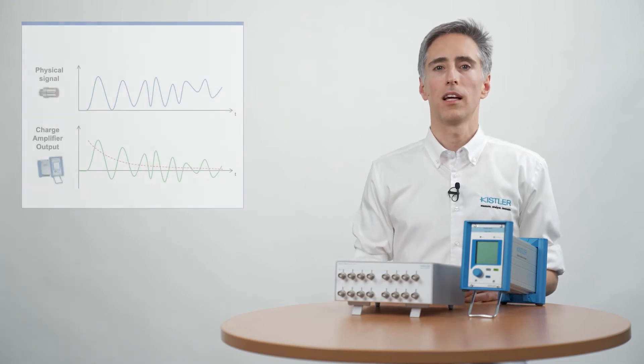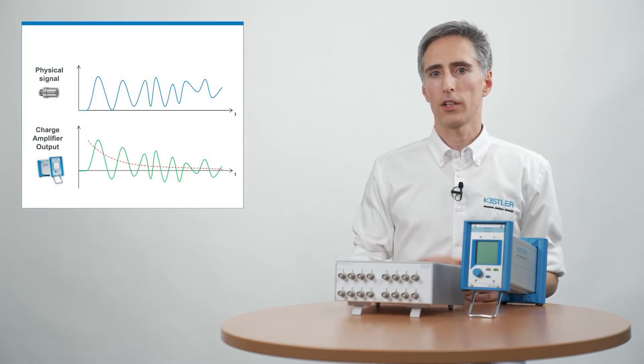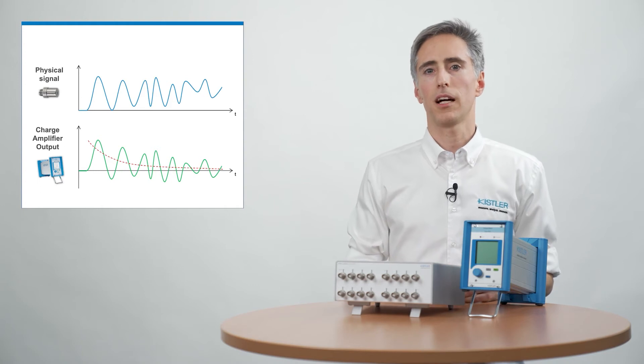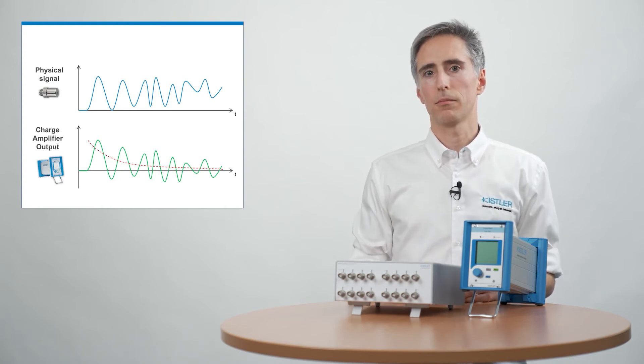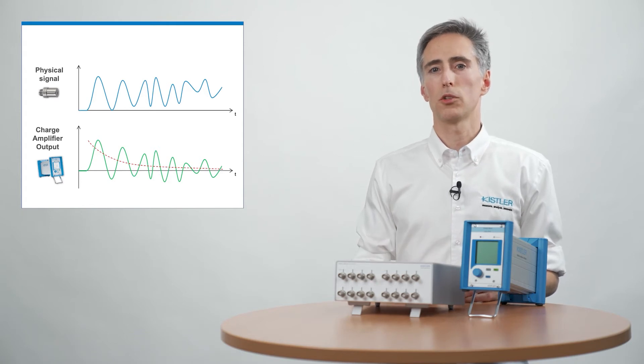When we have a continuous signal with some DC content, it will be filtered away over time, and after 5 times the time constant value, we have the pure dynamic signal content left. This allows us to measure pulsation or vibration signals for an unlimited time. The signal will never drift away, even after months.